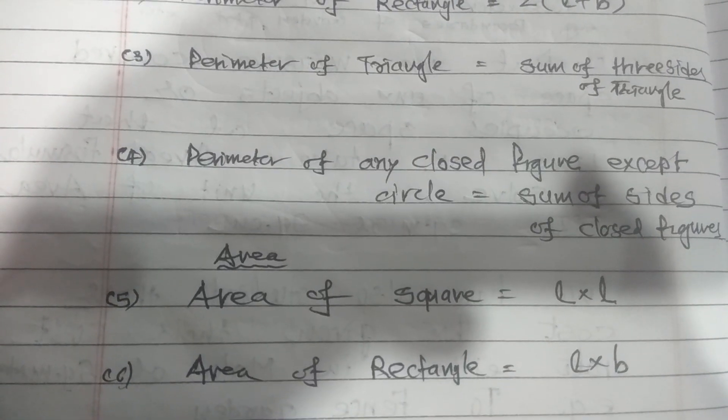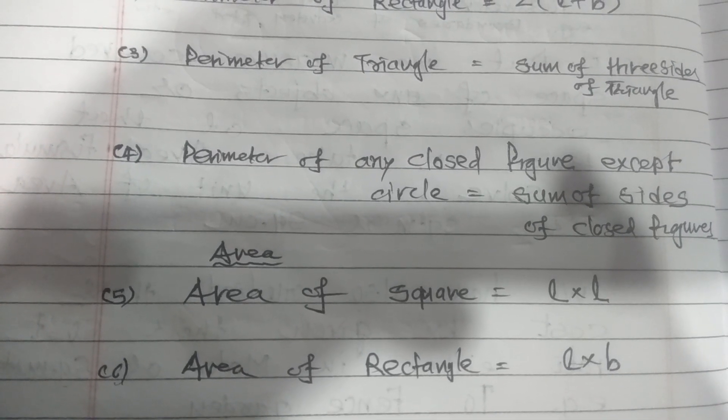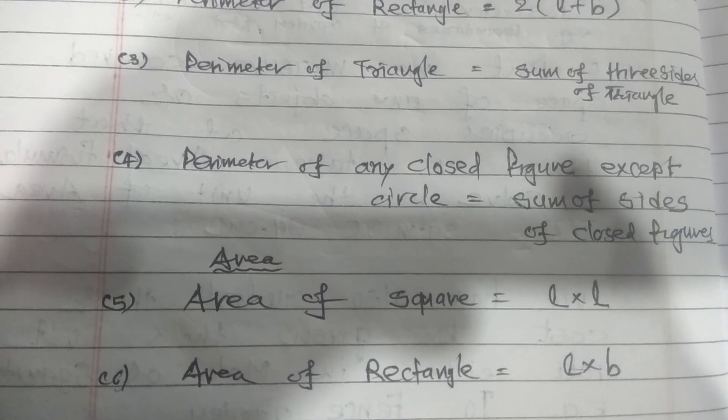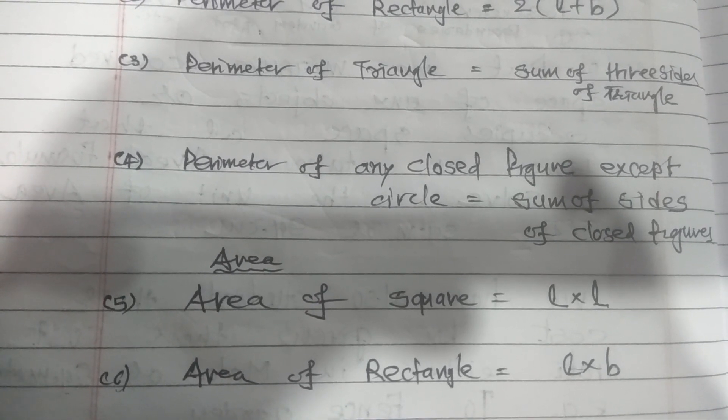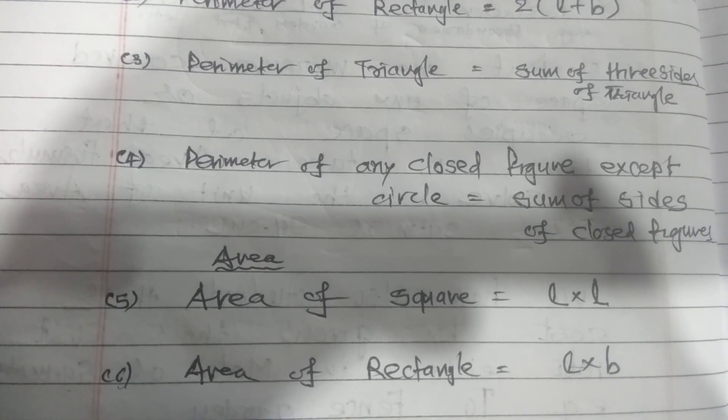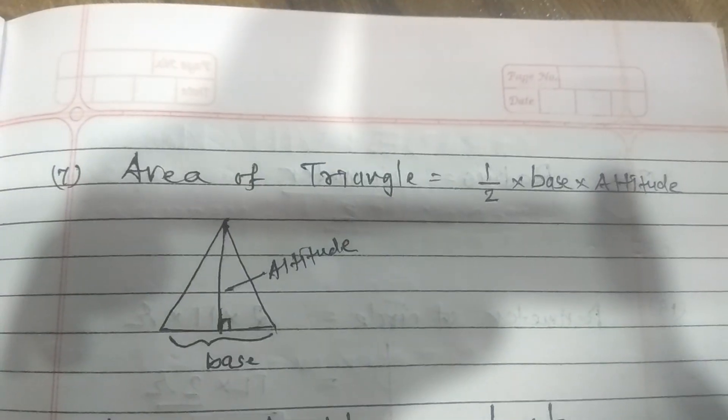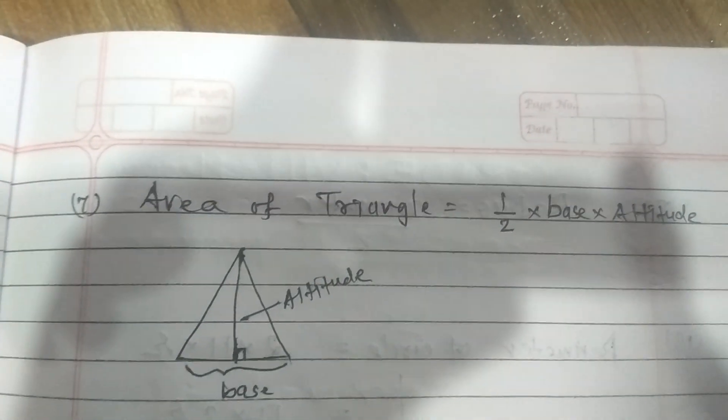Let's see the formulas of area. Area of square is length multiplied by length, or you can say L square. Area of rectangle is L multiplied by B, where L is length of the object or figure and B is the breadth of an object or figure.